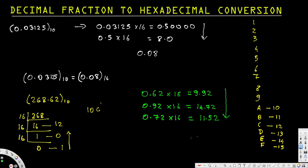Going from top to bottom, we pick up the integer parts: 9, 14, 11. We keep 9 as 9; 14 is E; and 11 is B. So the fraction part converts to 0.9EB in hexadecimal. The full conversion is 10C.9EB.